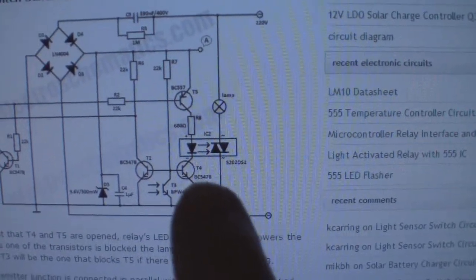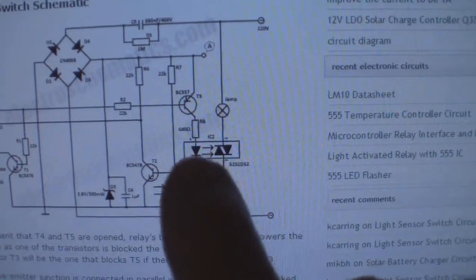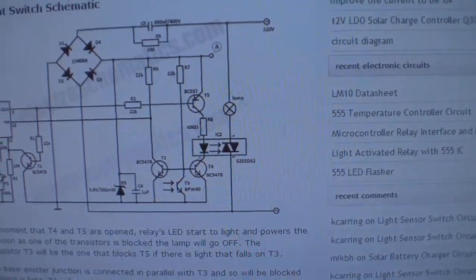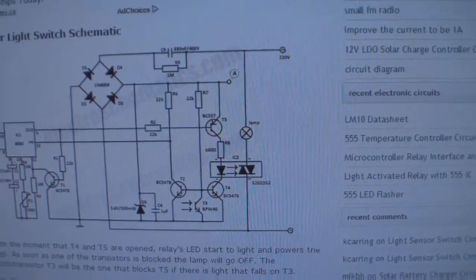Over in this section here, that's your 680 ohm resistor to the positive side of an LED which is integral to that optocoupler. Anyway...